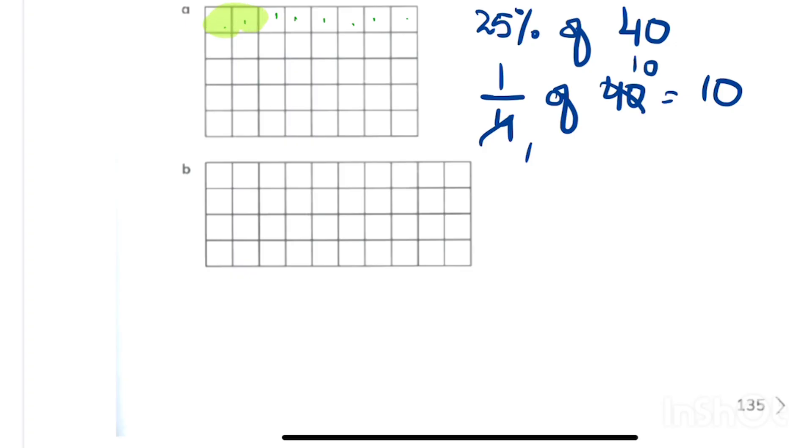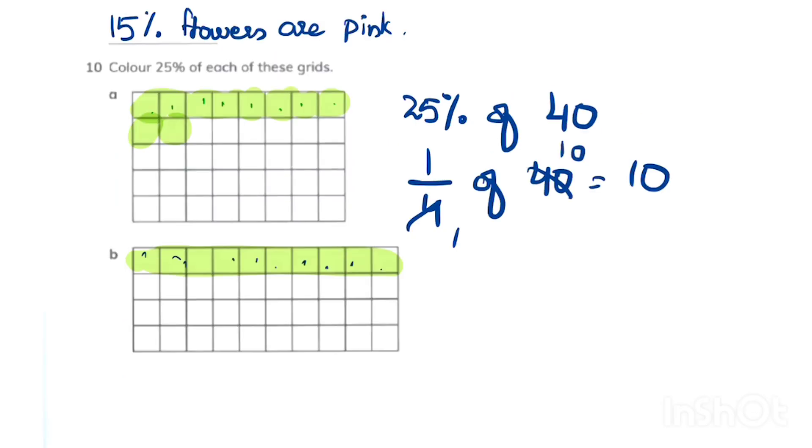Try to remember these percentages with their fractions. 25% means 1 fourth. 50% means half. And 75% means 3 fourths. In this way you will be able to do this easily. Thank you for watching.